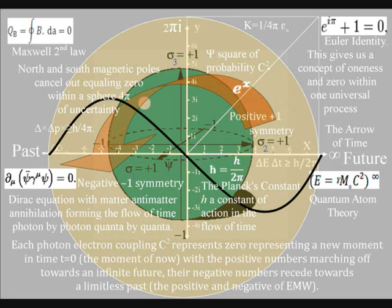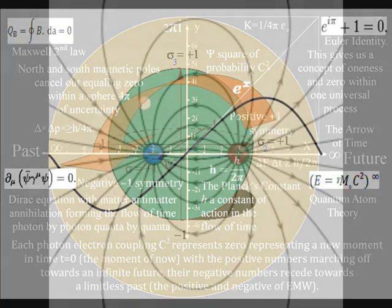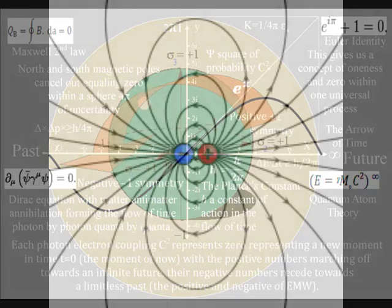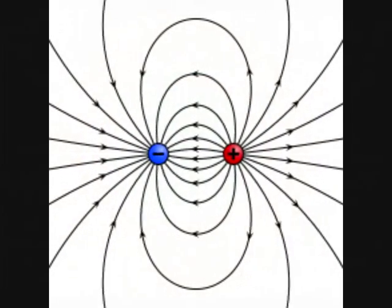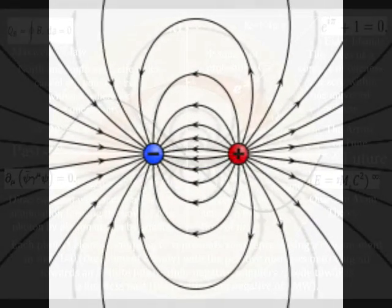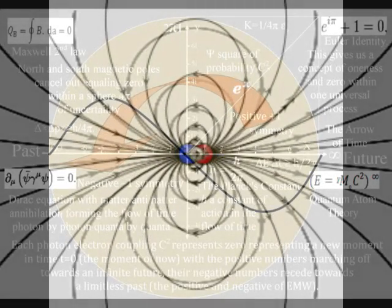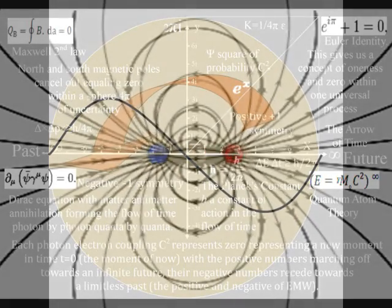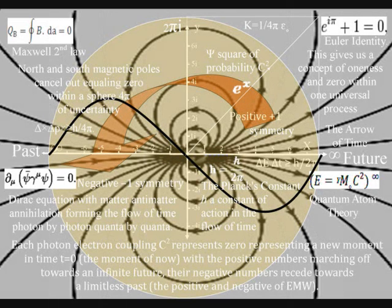In Maxwell's theory of magnetic fields any moving charged particle creates a magnetic moment. Because positive and negative charge is an innate part of matter that keeps cancelling out, this process is universal and continuous, forming a continuum of time moment by moment. On the lower left hand side of the diagram we have Dirac's equation that also equals 0, representing zero time, with matter-antimatter annihilation forming a magnetic moment or dipole moment with a future coming into existence photon by photon, quantum by quantum.